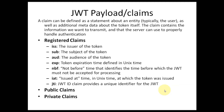AUD is the audience — who are the intended recipients of this token. EXP is the token expiration — when the token is going to expire. NBF is 'not before' time, meaning the token cannot be used before a particular time. For example, if the current time is 10 PM and NBF is set to 10:15 PM, this token cannot be used until the clock crosses 10:15 PM. IAT is 'issued at' time, and JTI provides a unique identifier for the JWT token.